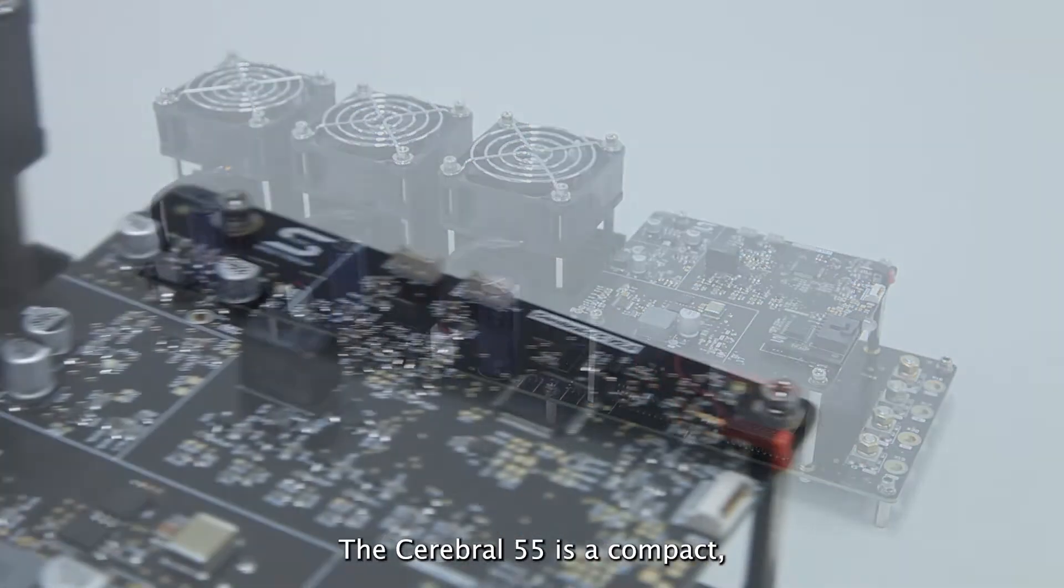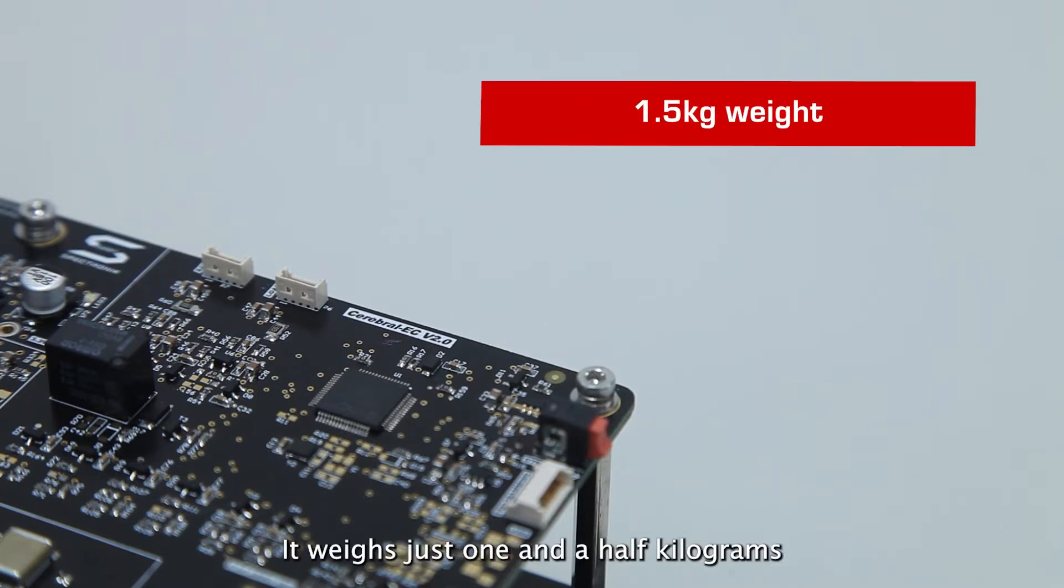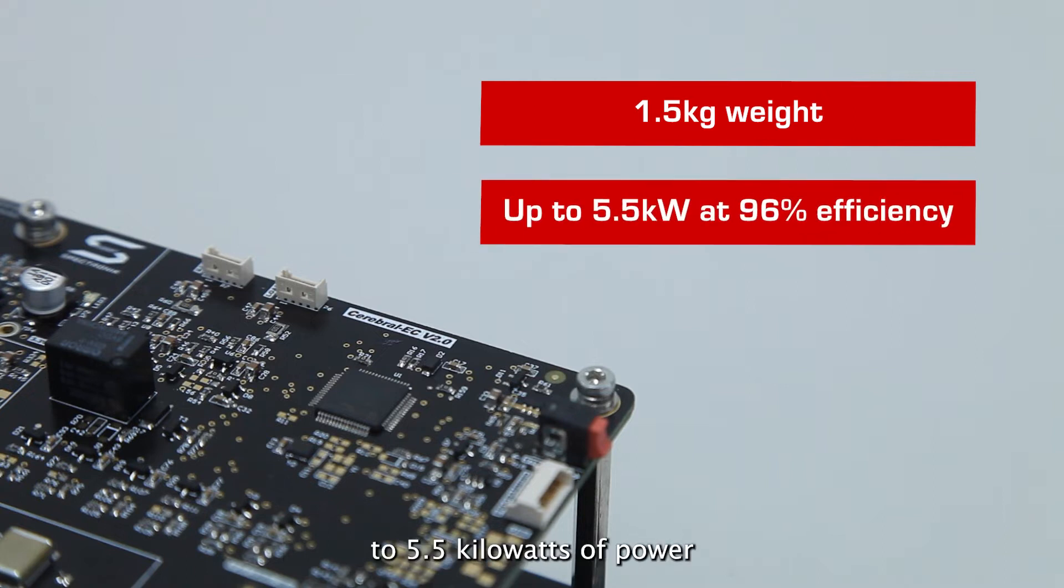The Cerebro 55 is a compact, powerful and efficient DC to DC converter. It weighs just 1.5kg and can deliver up to 5.5kW of power at 96% efficiency.